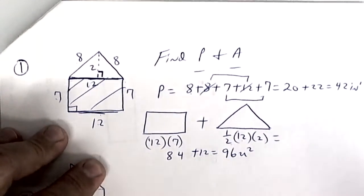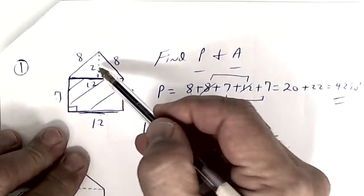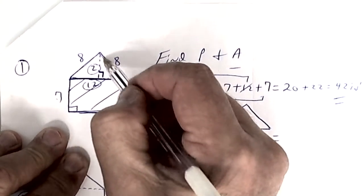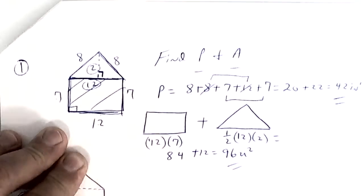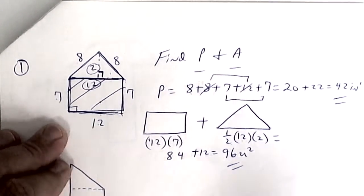So you have perimeter and area. Remember in perimeter you don't add the 2 and you don't add that 12. You just add the sides. That's called perimeter. It's the exterior or distance around an object. And then to do the composite area you have a rectangle and a triangle.